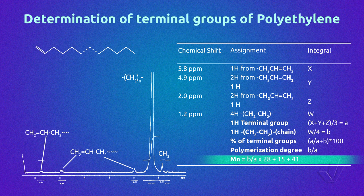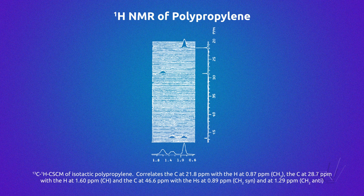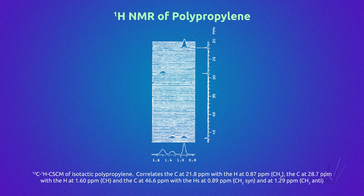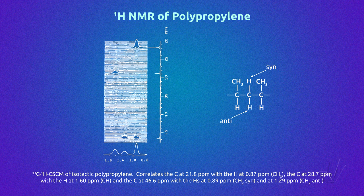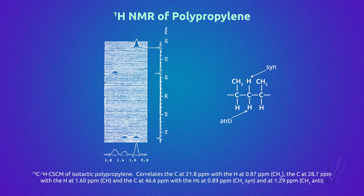Our last example is isotactic polypropylene. In carbon-13 NMR, there are only three signals corresponding to each type of carbon: methylene, methine, and methyl. Correlating carbon-13 NMR with proton NMR in polypropylene, it is possible to see that the two protons of the CH₂ from isotactic polypropylene are not equivalent. This is a difference with syndiotactic polypropylene, where those two protons are perfectly equivalent.